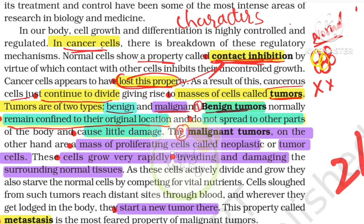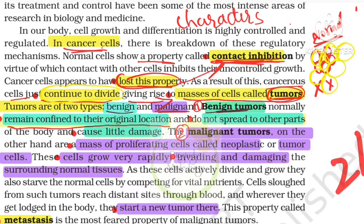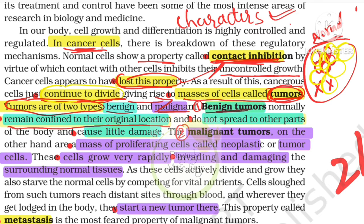Cancer cells just keep on multiplying and keep on growing. These are the characters of cancer cells: they do not show contact inhibition, and they show uncontrolled growth — they can divide and divide. Cancer cells are of two types.